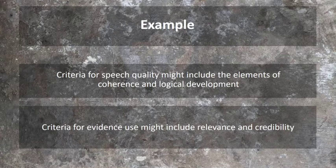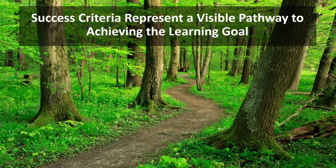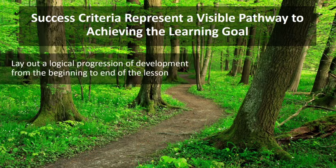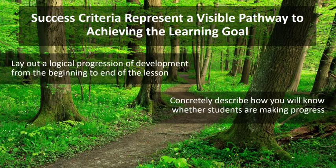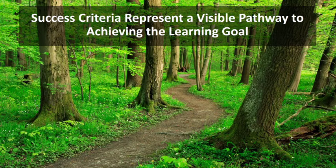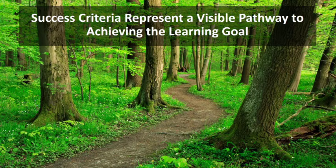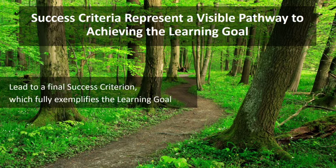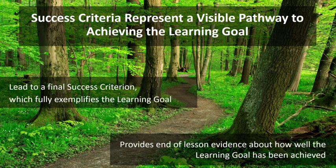Students can also participate in the co-creation of the success criteria. Success criteria also represent a visible pathway to achieving the lesson learning goal — laying out a logical progression of how you expect students' knowledge and skill to develop from the beginning to end of the lesson, and concretely describing how you will know whether students are making progress. If students are not making the expected progress, immediate action can be taken to fill in any gaps. Importantly, success on the success criteria during the lesson should lead to students achieving the final success criterion — a performance which fully exemplifies the learning goal and provides end-of-lesson evidence about how well the learning goal has been achieved.